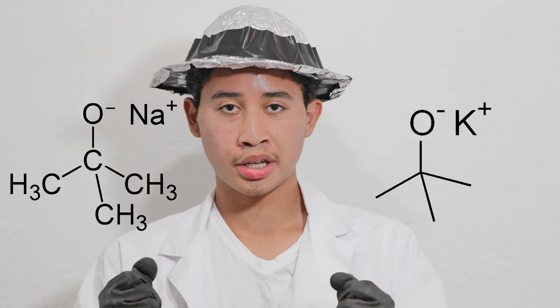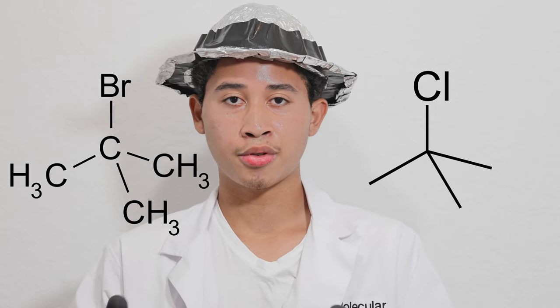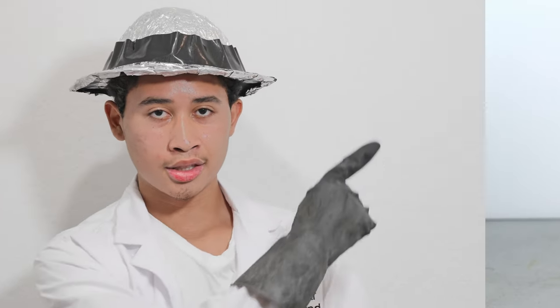The reason why I'm making tert-butanol is that it is an incredibly versatile reagent. It can react with alkali metals like sodium and potassium to form very strong bulky bases known as tert-butoxides. It can also react with hydrogen halides to form tert-butyl halides. With sulfuric acid, it can dehydrate into isobutylene. And with aromatic compounds, it can add on to them as tert-butyl substituents. But that's enough about tert-butanol. Let's get started.